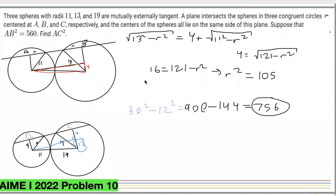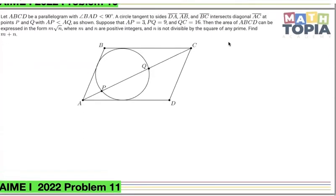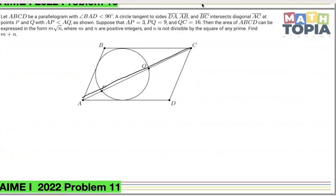This is a nice problem using 3D geometry. Now we move on to problem 11, which goes back to 2D. It's easier to visualize but harder to figure out the approach. We're given a parallelogram, a circle, and a line through the circle. The line is divided into three lengths: 3, 9, and 16. There are three points of tangency.